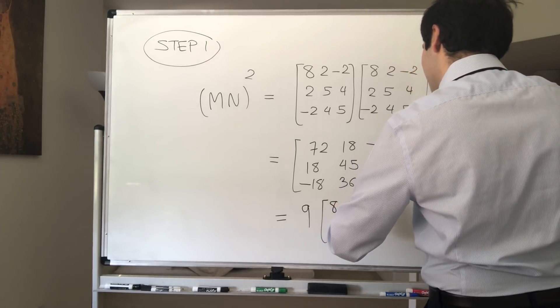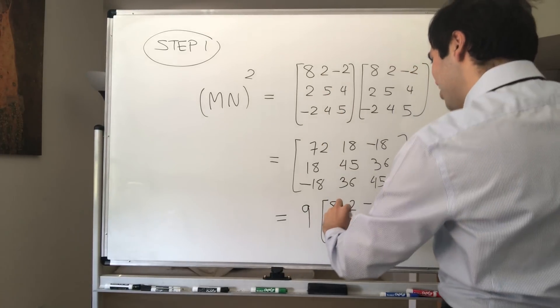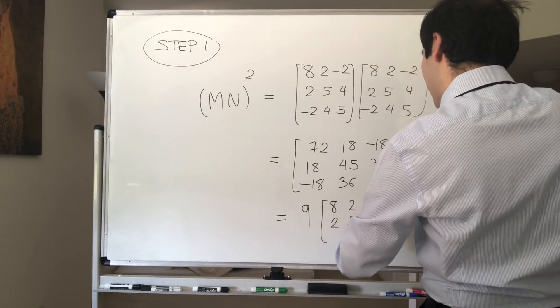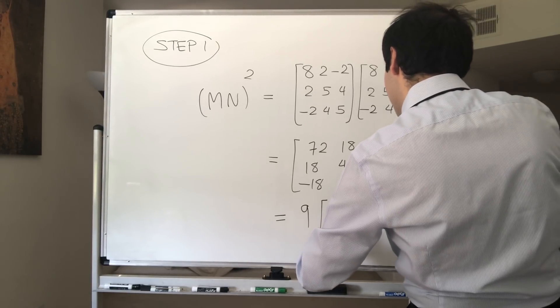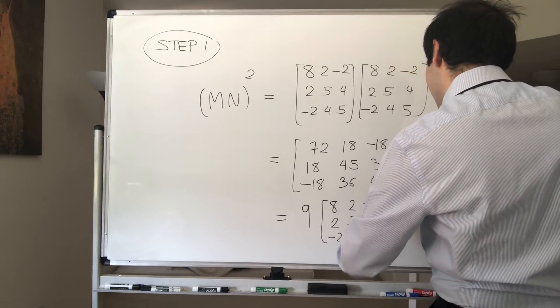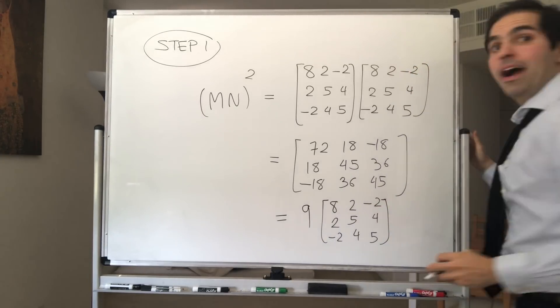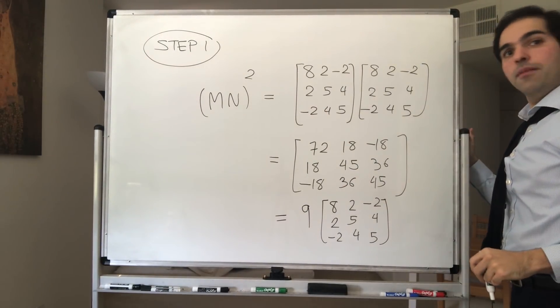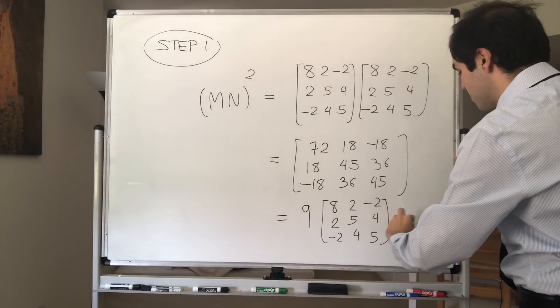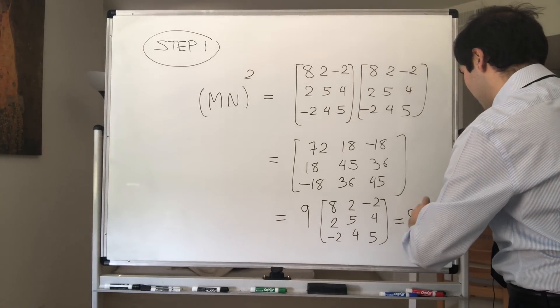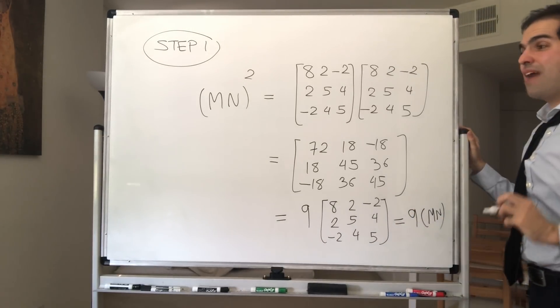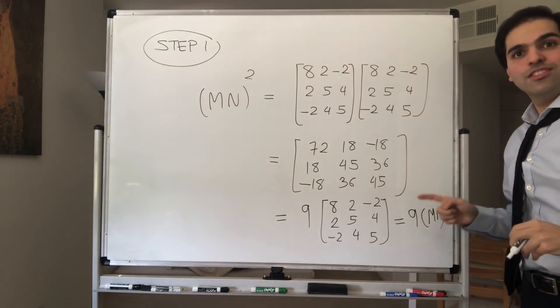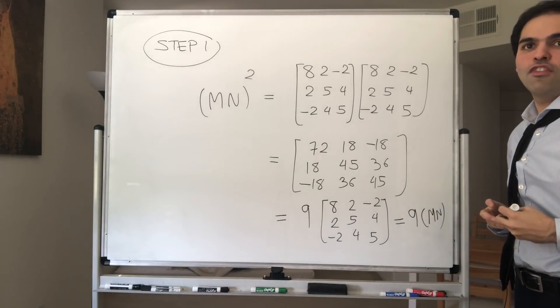So we get 9 times, let's see, 8 2 -2, 2 5 4, and then -2 4 5. Oh my god, so in other words, MN MN is 9 times MN. Wow, so MN squared is 9 times MN. And let's explore this fact in order to solve our problem.